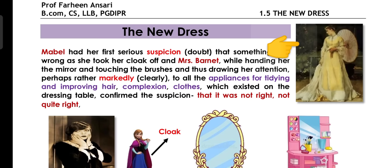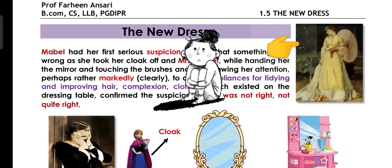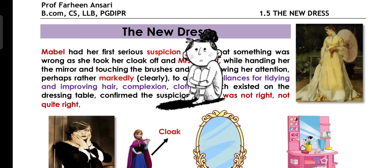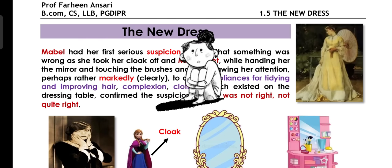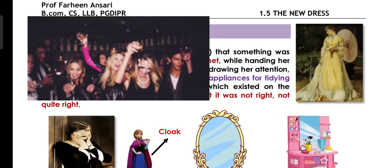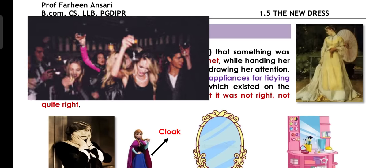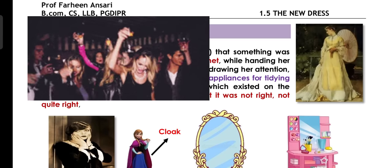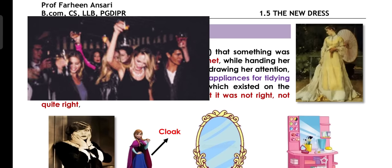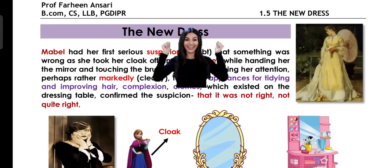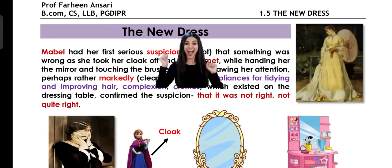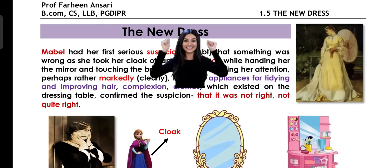As I told you in the introduction, Mabel is a very low-confidence lady. She always thinks about what people will say. Now, when Mabel receives an invitation to Mrs. Dalloway's high-class society party, she is shocked to realize she has only a yellow dress.